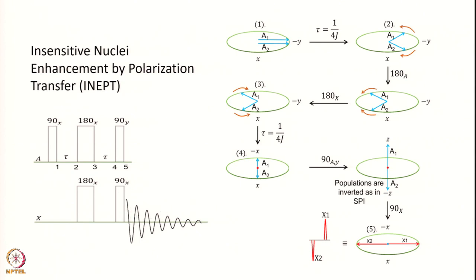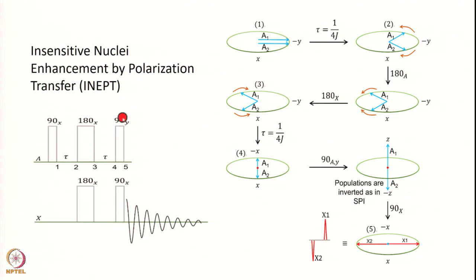Now let us analyze this. Basically, if you recall the spin echo experiment, we had 90°–τ–180°–τ as the spin echo sequence. At the end of this 2τ we have the echo appearing. Then you apply a 90° pulse on both the A channel and the X channel to transfer magnetization from the A spin to the X spin.